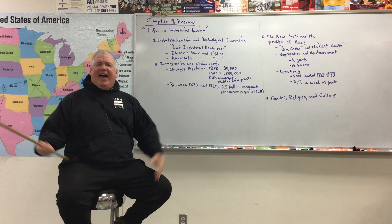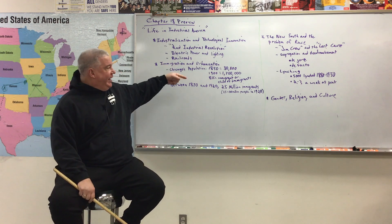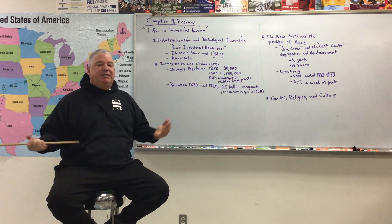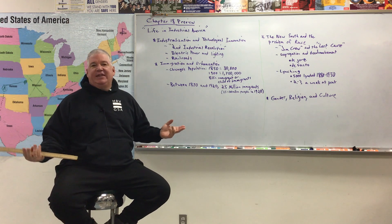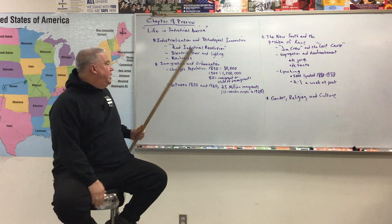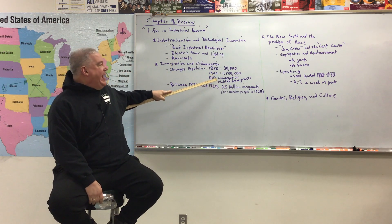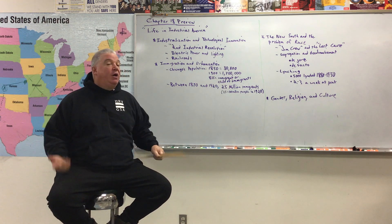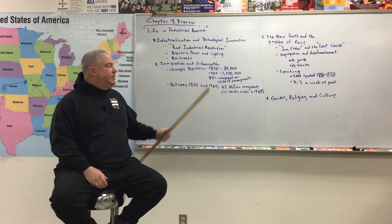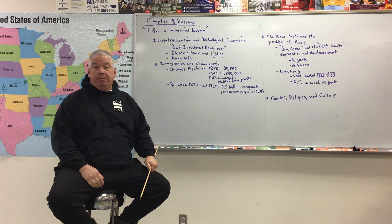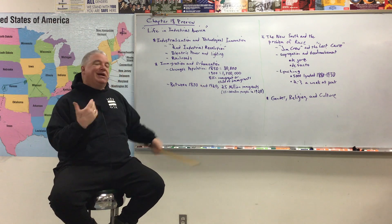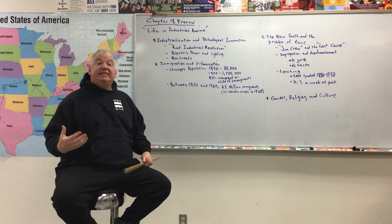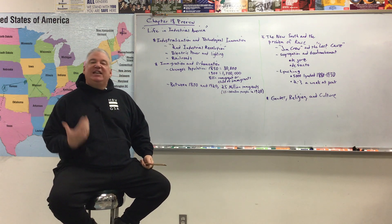By 1900, Chicago had 1.7 million people — larger than Portland is right now. That's just a 50-year bump. Did they have plans for roughly a 200-times increase in population? Heck no. So that city comes about and all kinds of urban problems come with it. Who were these people moving to Chicago? By 1900, 80% of Chicago's population were immigrants or the children of immigrants. They were from all around the world, but largely from Southern Europe and Eastern Europe.